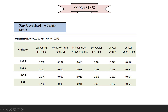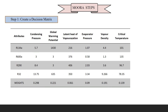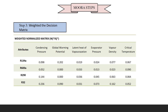Then Step 3 is the weighted decision matrix, given as Wj × Xij. From Step 2 we obtained Xij, and from Step 1 we obtained Wj. Combining these first two steps gives us the weighted normalized matrix as Wj × Xij.